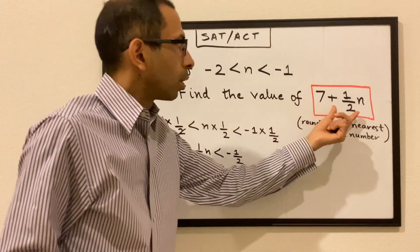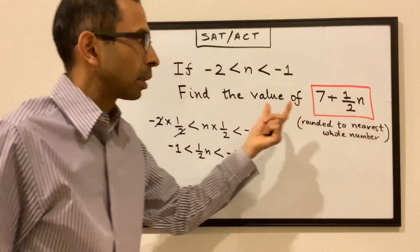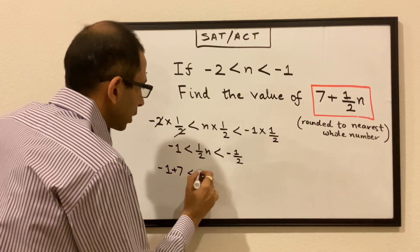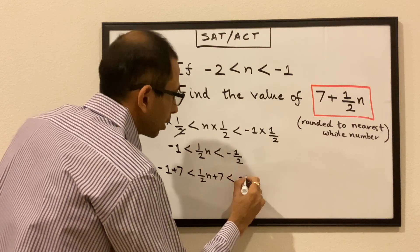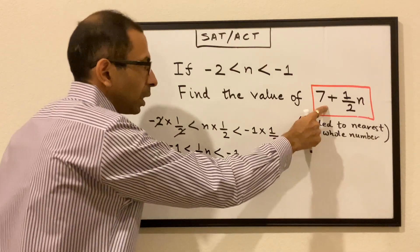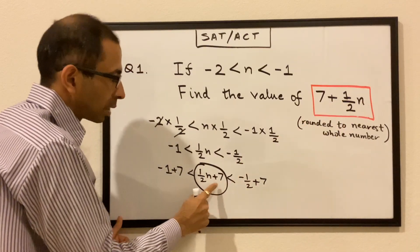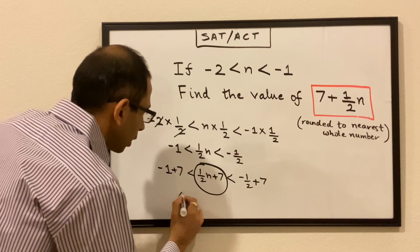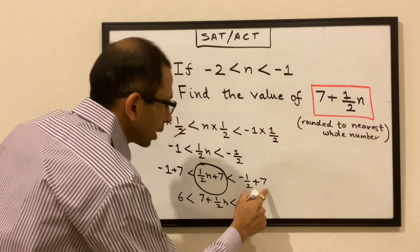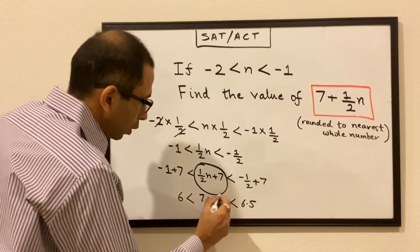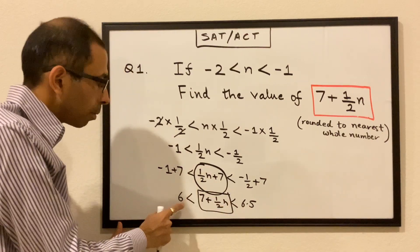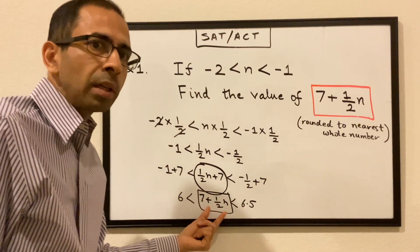We've reached half n, but we need 7 plus half n, so let's add 7 on all sides. Minus 1 plus 7 is less than half n plus 7 is less than minus half plus 7. So we get: 6 is less than 7 plus half n is less than 6.5. This value will always toggle between 6 and 6.5 — always less than 6.5 but greater than 6.